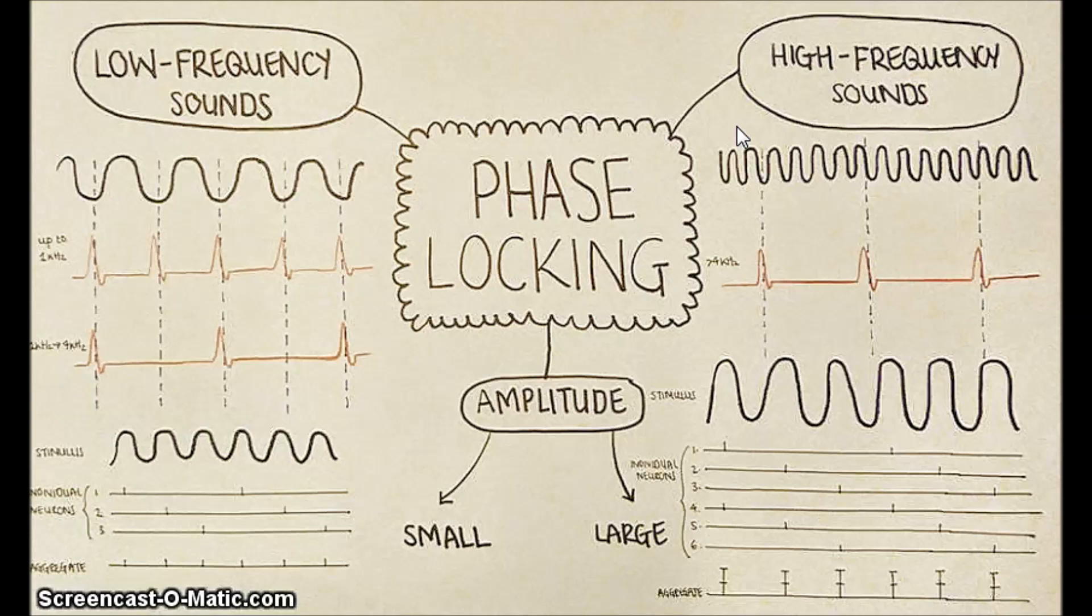This is because of the intrinsic variability in the timing of action potentials. It's about the same as the time interval between successive cycles of sound. This basically means that the neuron just ends up firing at random phases of the sound wave.